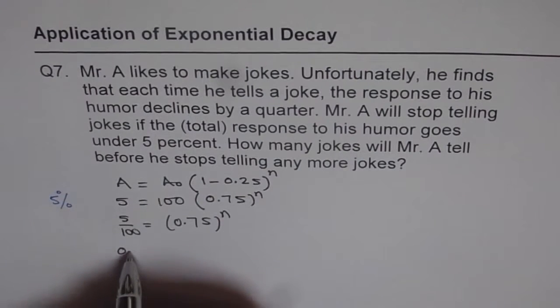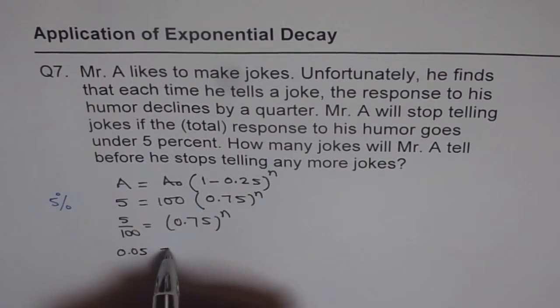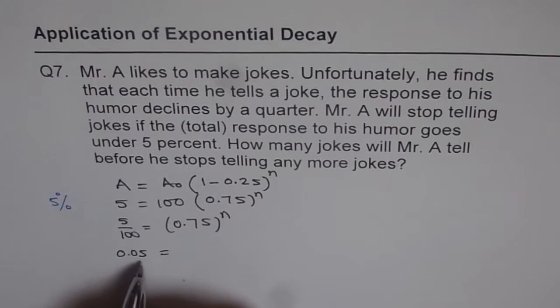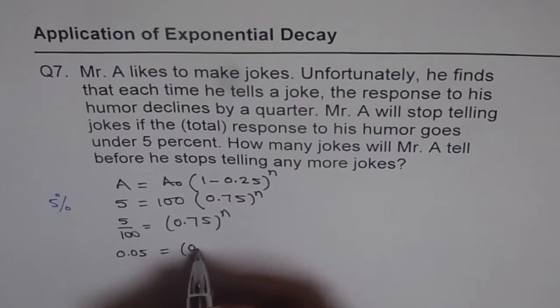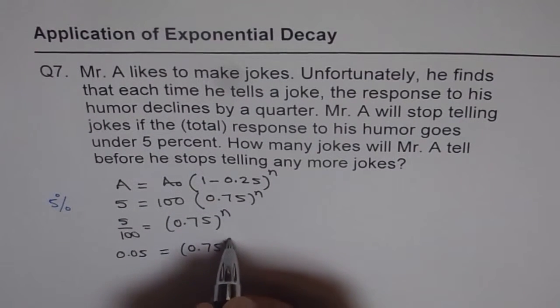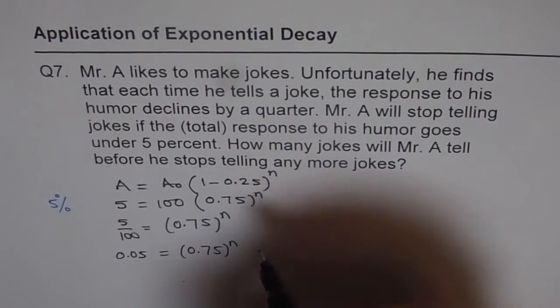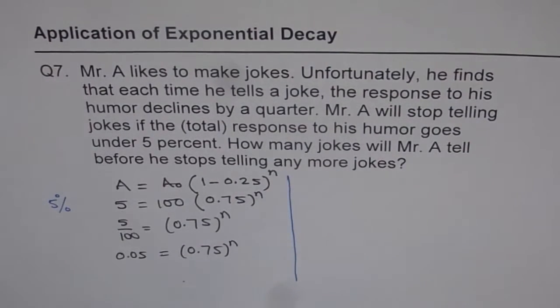Now 5 over 100 is 0.05 which is 5%. So we could have started with this equation also: 0.05 equals 0.75 to the power of n. Now to solve this equation, we can do trial and error.